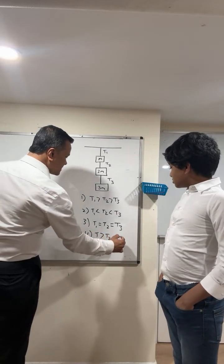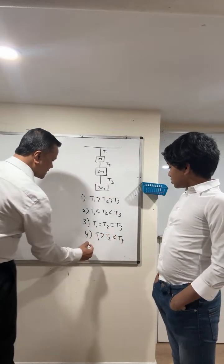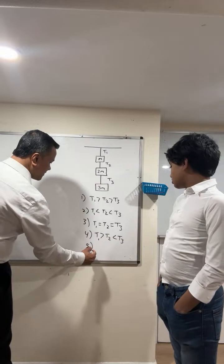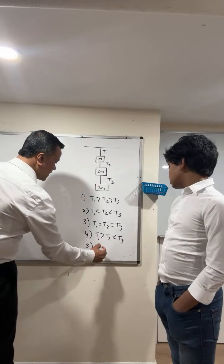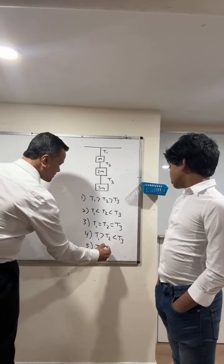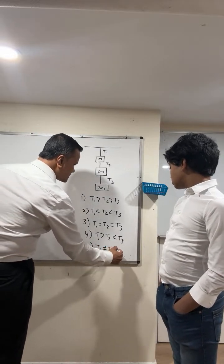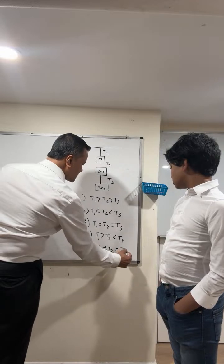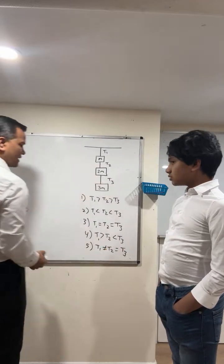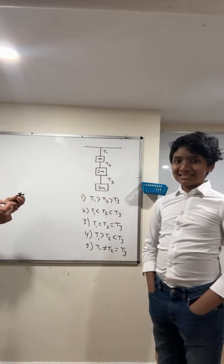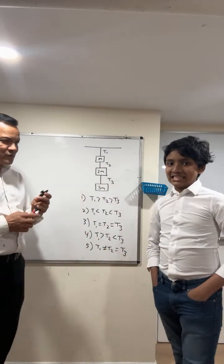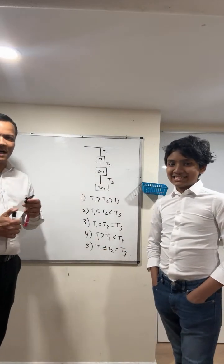2M is smaller than T3. Number 5: T1 is not equal to T2, however, is equal to T3. Okay, so I wish you good luck.